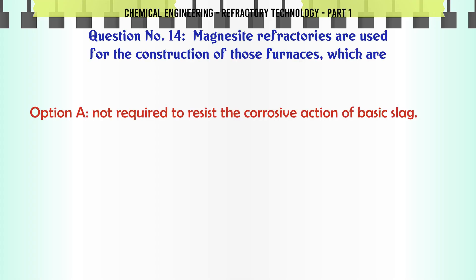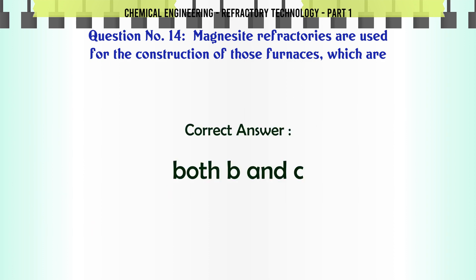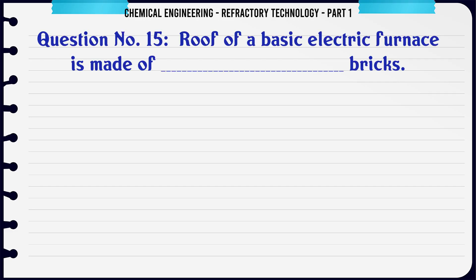Magnesite refractories are used for the construction of those furnaces which are: A. Not required to resist the corrosive action of basic slag, B. Not subjected to fluctuation in temperature, C. Used for raising and maintaining high temperature, D. Both B and C. The correct answer is Both B and C.